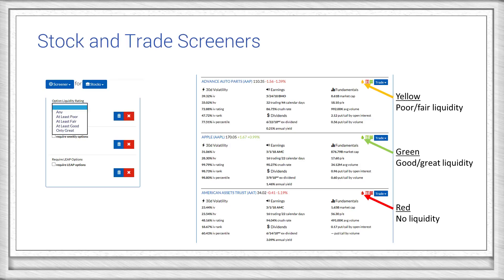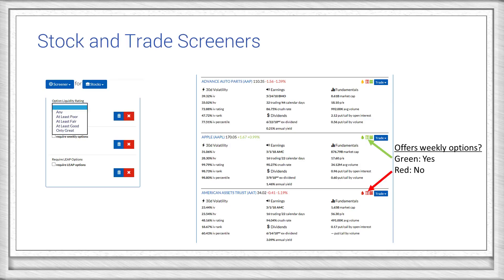Next to the drop icon, you'll see a green indicator for whether the stock offers weekly options — otherwise it'll be red. To the right of that is an indicator for leap options; it's also green if available, and red if not.